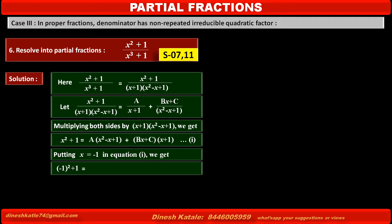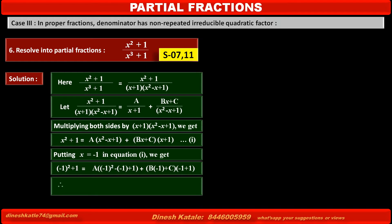Replacing x by -1: the left-hand side becomes (-1)² + 1. On the right-hand side, the first term is A[(-1)² - (-1) + 1], and the second term is (b(-1) + c)(-1 + 1). Solving these, we get A = 2/3.